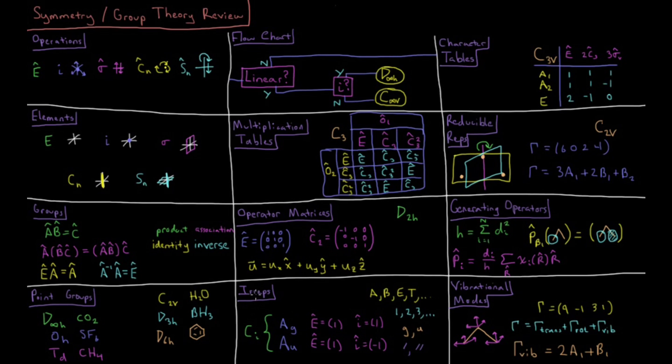We have things called irreducible representations, which are basically the operators of a point group represented in the matrices or the arrays which are the minimal form which comply to the group multiplication tables for that particular point group.